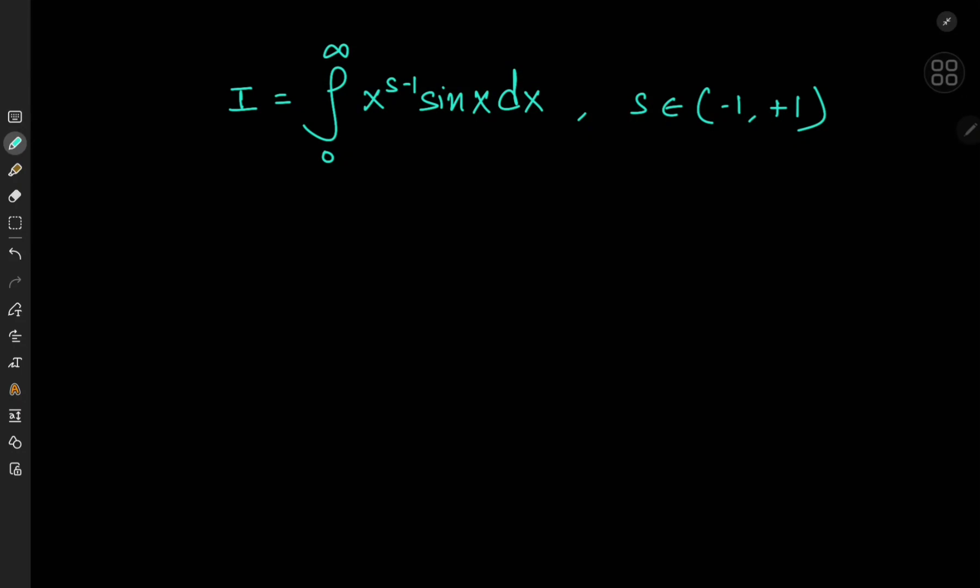Today we're going to look at a very interesting approach to figuring out the Mellin transform of the sine function. Our approach is going to make use of another very important integral transform. We're interested in the integral from zero to infinity of x to the s minus one times the sine of x, where the s parameter lies between negative one and positive one.